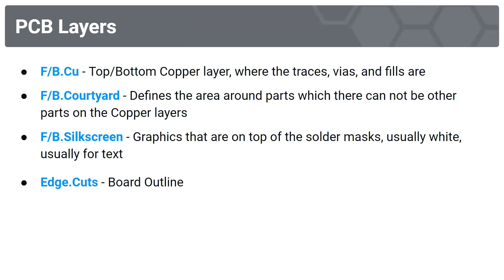Now let's talk about PCB layers. F and B stand for front and bottom. The front and bottom copper layers are where traces, vias, and fills are. The front and bottom courtyard defines the area around parts where no other parts can overlap on the copper layers. The front and back silkscreen are graphics on top of the solder mask, usually white text.